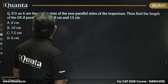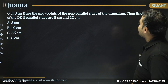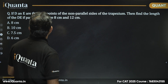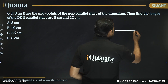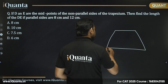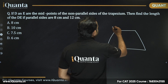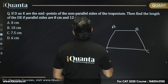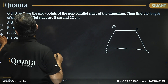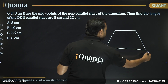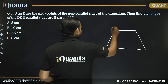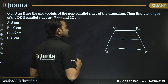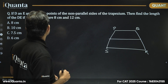Next question: if D and E are the midpoints of the non-parallel sides of the trapezium, find the length of DE if the parallel sides are 8 centimetre and 12 centimetre. So let's draw trapezium PQRS where D is the midpoint of PS and E is the midpoint of QR. If we join the diagonals, by the midpoint theorem, D is a midpoint and E is also a midpoint, so DE will be parallel to PQ and SR.